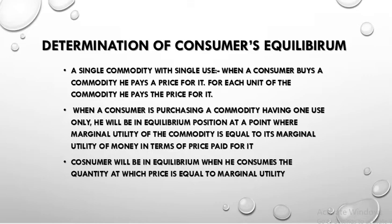In the case of a single commodity with single use, the consumer is purchasing a single commodity which has one use only. When a consumer buys a commodity, he pays a price for it, and in paying the price he makes a sacrifice. The marginal utility of money remains constant. He will be in equilibrium at the point where the marginal utility of the commodity equals the marginal utility of money in terms of price — that is, utility gained equals utility sacrificed. The consumer will be in equilibrium when he consumes the quantity at which the price equals the marginal utility derived from that unit of the commodity.